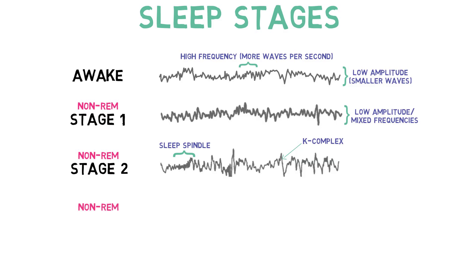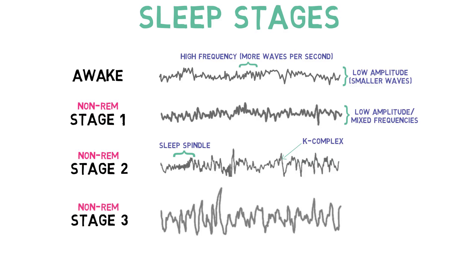Stage 3 sleep is also known as slow-wave sleep, or deep sleep. In stage 3, delta waves, which are low-frequency, high-amplitude waves, make up a significant proportion of brain activity.